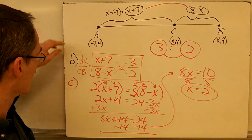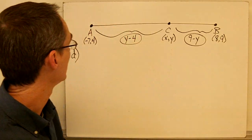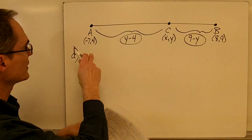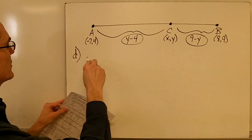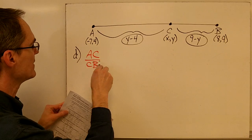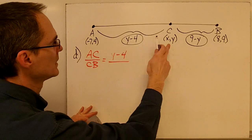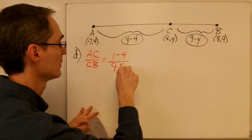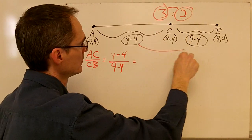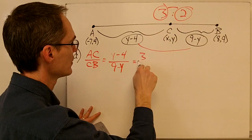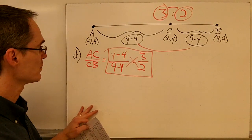Now let's do the same thing for the Y distances to find the Y coordinate. Part D sets up a separate proportion. AC in the Y direction is Y minus 4, and CB in the Y direction is 9 minus Y. I want this ratio to be 3 to 2, so: Y minus 4 over 9 minus Y equals 3 over 2.